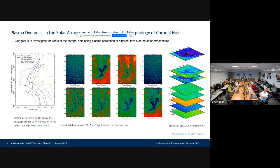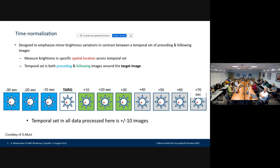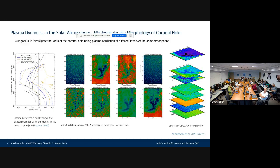This kind of study was done because I was just curious what kind of results we can obtain. As you know, AIA doesn't have a possibility to measure Doppler velocities, which is kind of challenging to tell about the oscillations without velocity information. Our goal is to investigate the roots of the coronal hole using plasma oscillations at different levels of the solar atmosphere. We thought that maybe it would be worth to normalize our data to avoid the difference in intensity.